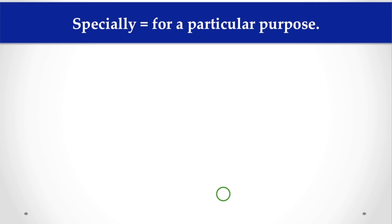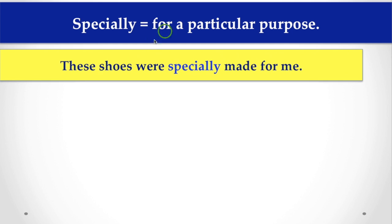Now let's see about specially. As I have told you earlier, specially is always used for a particular purpose. When we are talking about a purpose or particular thing, we have to use specially. And here are the examples for you: These shoes were specially made for me. And here specially refers to a particular purpose.